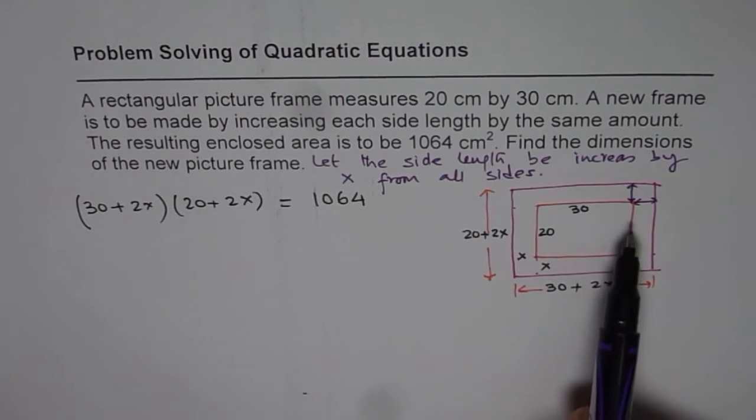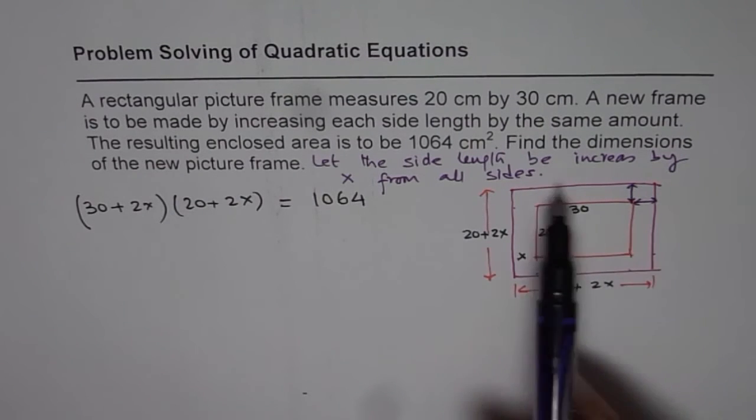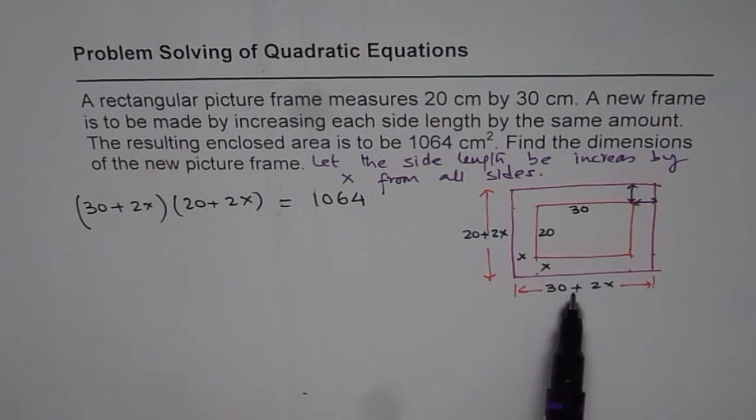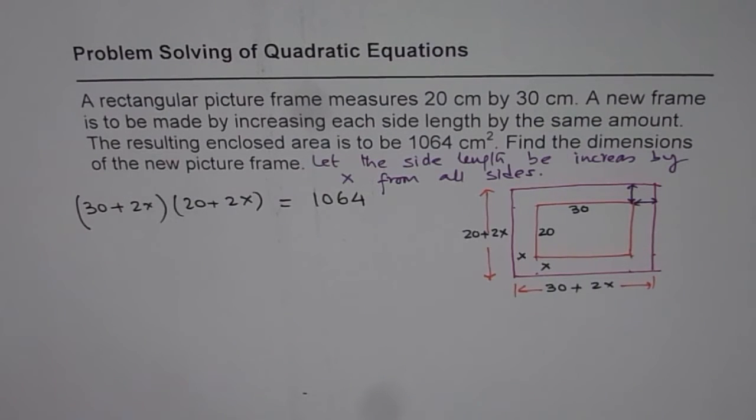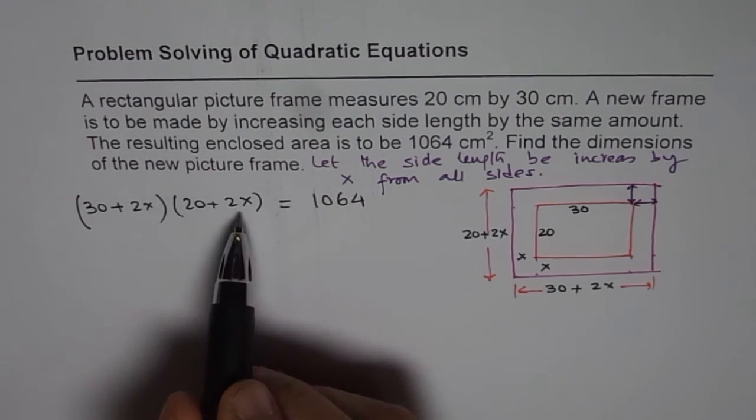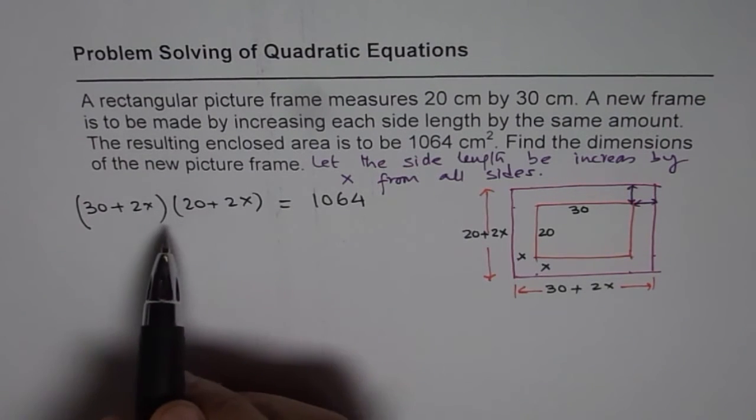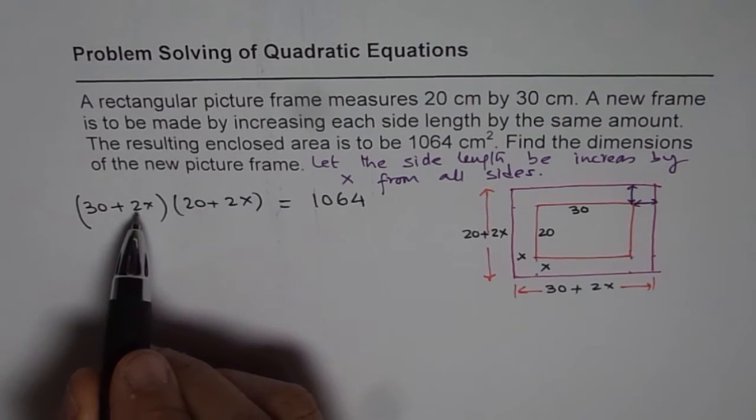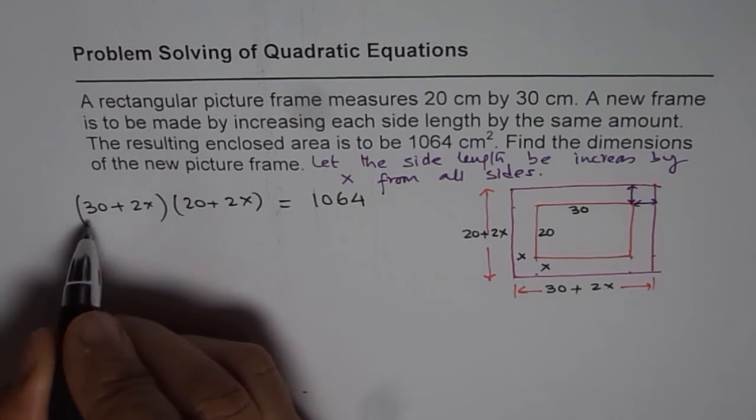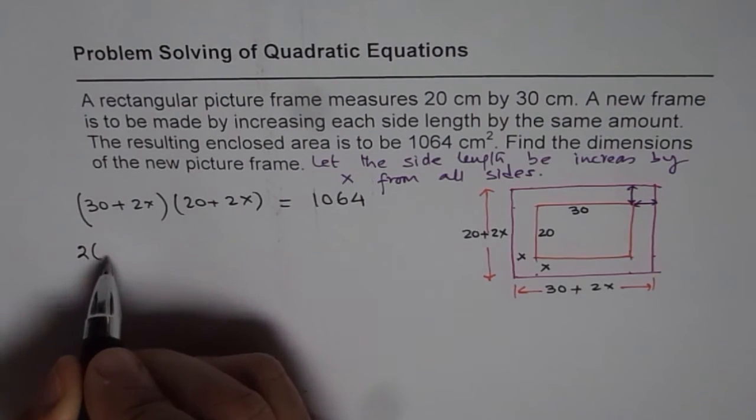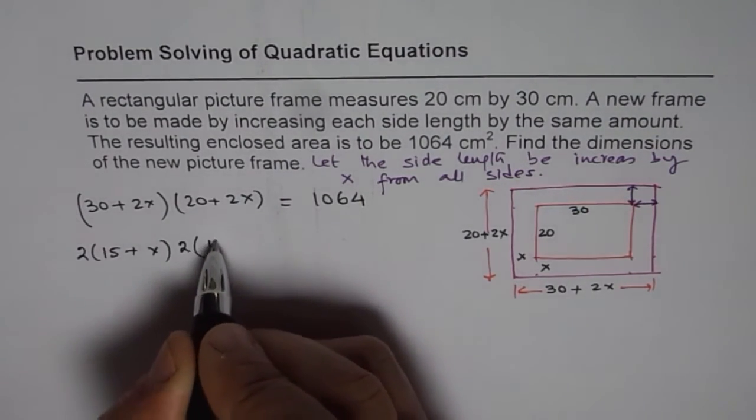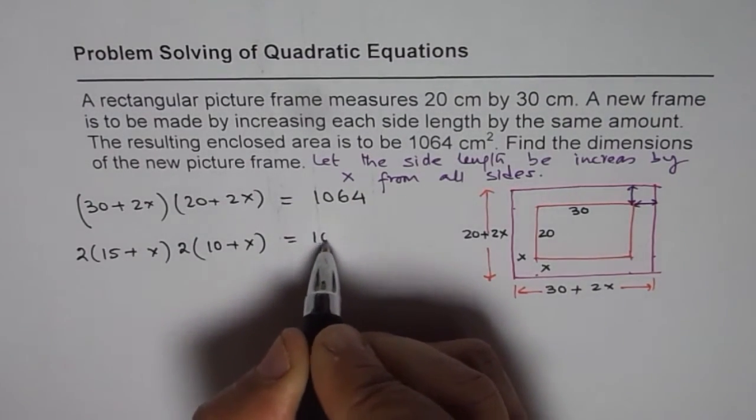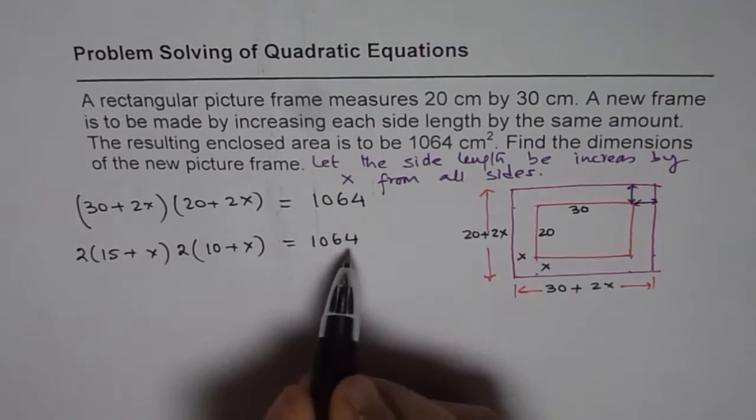Now once that is there, then the dimensions of the bigger frame are going to be, as shown here, 30 plus 2x as the length and 20 plus 2x as the width. And now we can solve for x. Now to solve for such an equation, instead of just multiplying, factoring is a better way. So we can take 2 and 2 common from here. If I take 2 common from this one, we get 2 times (15 + x). And here also if I take 2 common, I get (10 + x). And then we have 1064.